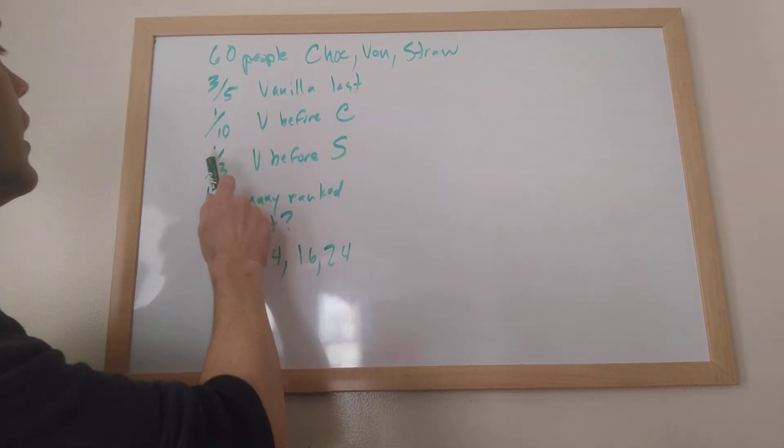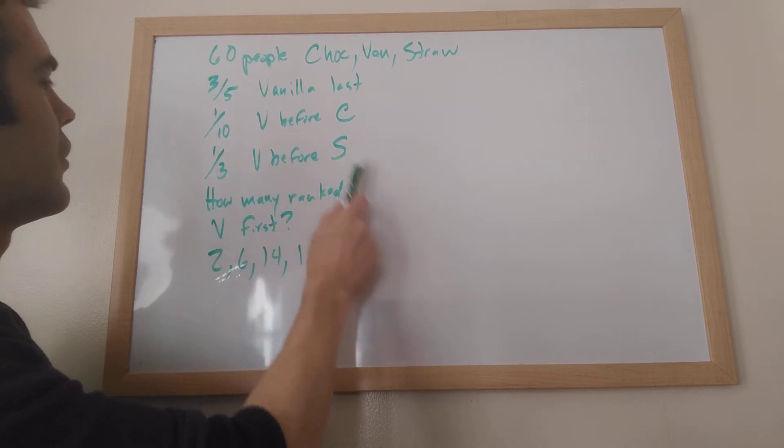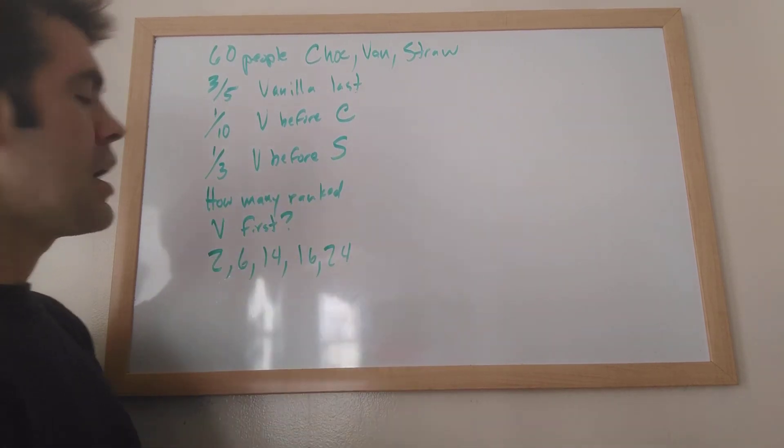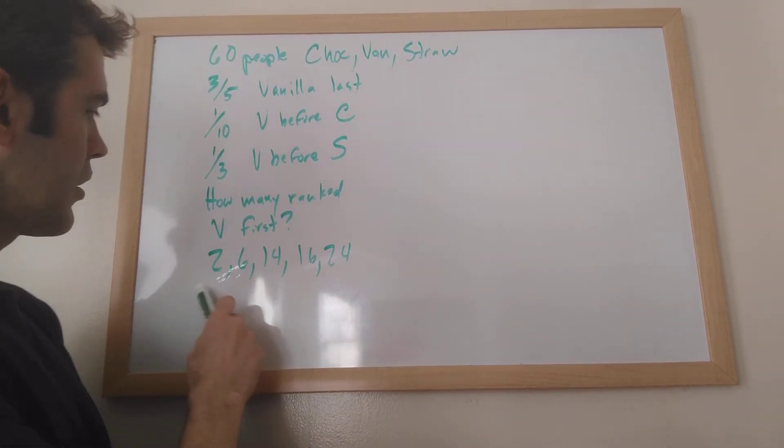Three-fifths of them rank vanilla last. Savages. One-tenth of them vanilla before chocolate. One-third vanilla before strawberry. And the question is, how many ranked vanilla first? And here are your five answer choices.